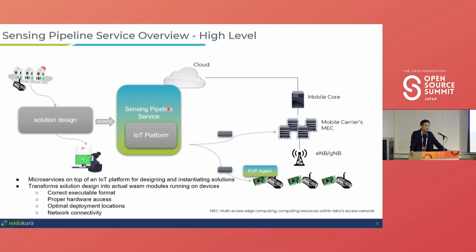These WebAssembly modules will run in the correct executable format. The Sensing Pipeline Service uses device information reported by EVP Agent — it knows the device architecture and capabilities — to perform ahead-of-time compilation, ensuring the WASM source code is compiled to the right binary format for that device. Based on the device capability, it knows exactly where to deploy and provides access to the hardware. For example, if the application needs to access a sensor, it tells the EVP Agent to do so — but only gives access to what is needed and nothing more.